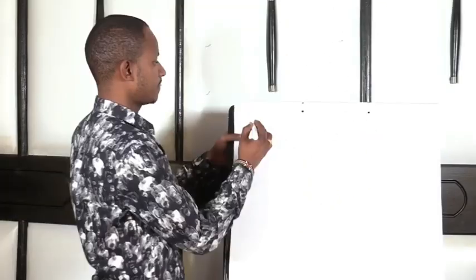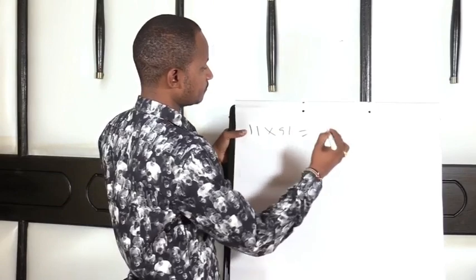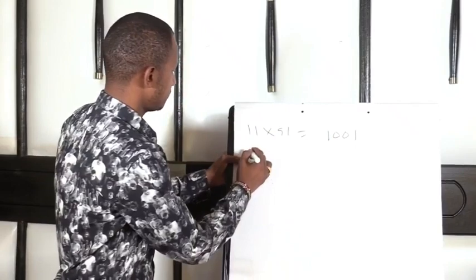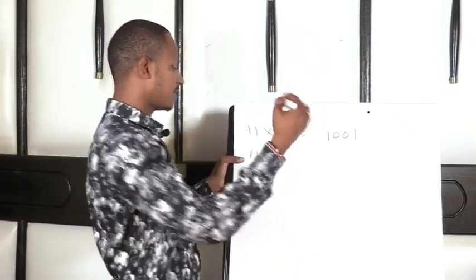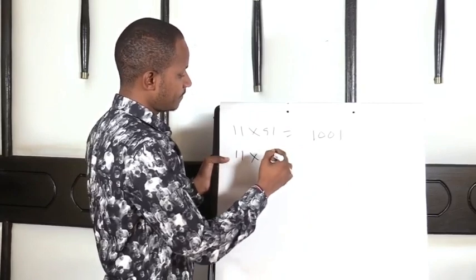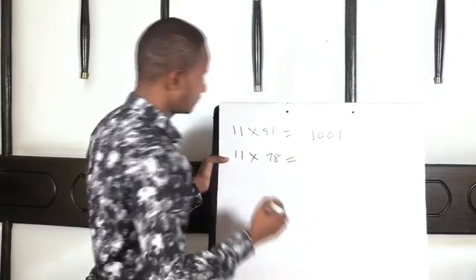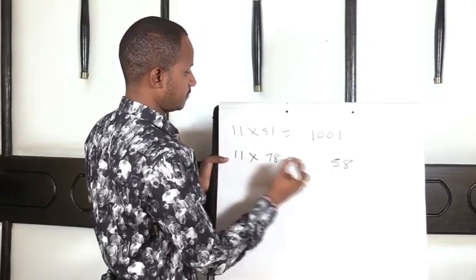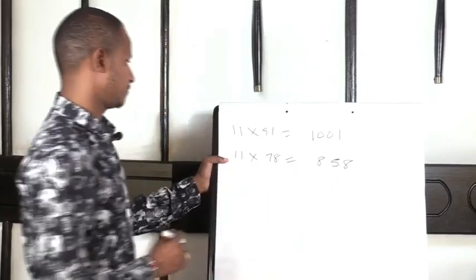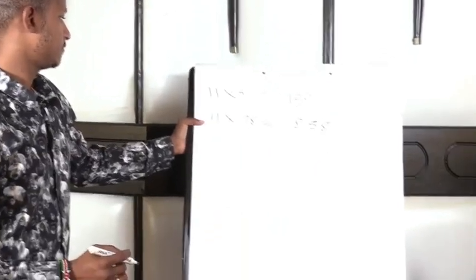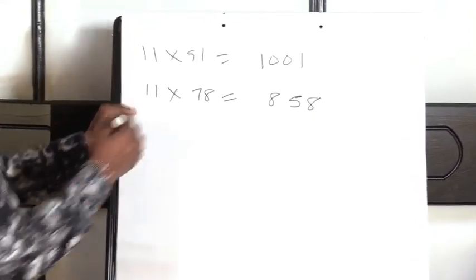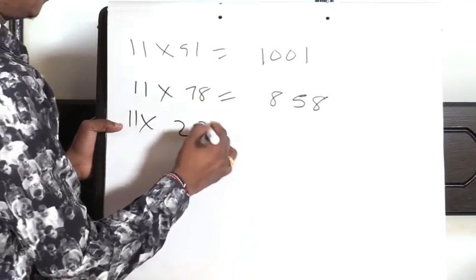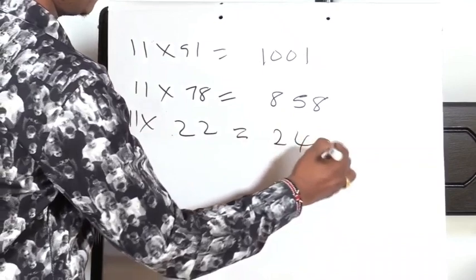So, 11 times 91, you get 1001. 11 times a number like 78, you get 858. 11 times 22, you get 242.